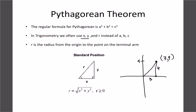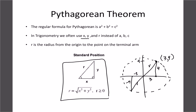We use r because we think of it as the radius of a circle. If we relocated the reference angle somewhere else using the same measurements — in this case it would be negative 1, negative 4 — the radius would still be the same. For now we just use x, y, and r. So using Pythagorean theorem: x squared plus y squared equals r squared.